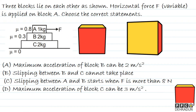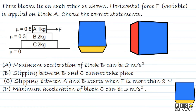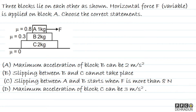Welcome students, let's look at this three-block problem. Three blocks lie on each other as shown. A horizontal force F (variable) is applied on block A. Choose the correct statements. Option 1: maximum acceleration of block B can be 2 m/s². Option 2: slipping between B and C cannot take place. Option 3: slipping between A and B starts when F > 8N. Option 4: maximum acceleration of block C can be 3 m/s².